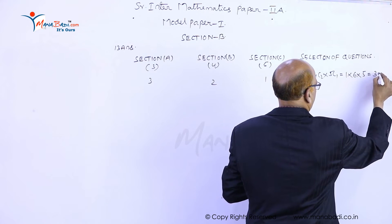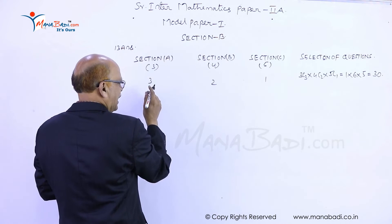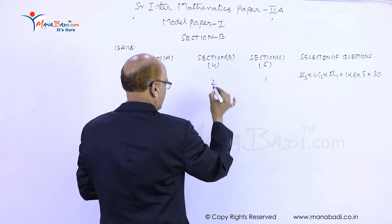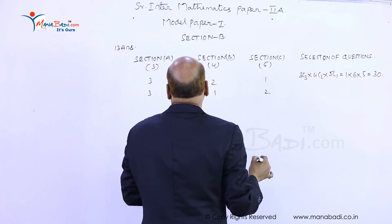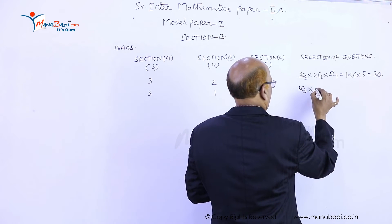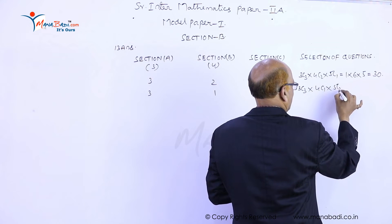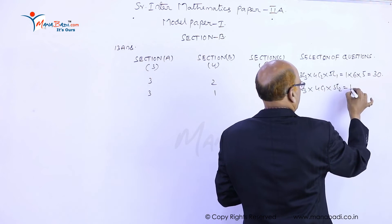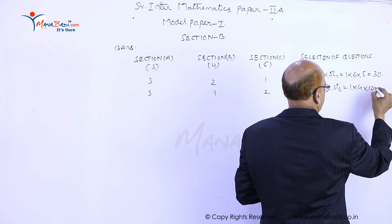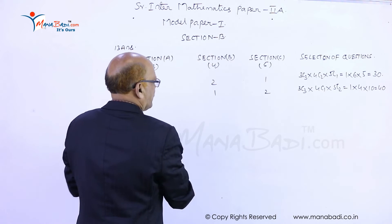Second case: I'll take three questions from A, one question from B, and two questions from C. This will be 3C3 into 4C1 into 5C2. So 3C3 is 1, 4C1 is 4, and 5C2 is 10, which equals 40.